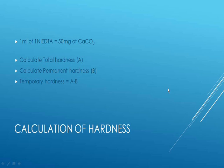To calculate permanent hardness, you need to boil the water sample so that dissolved bicarbonates of calcium and magnesium will precipitate out as carbonates or hydroxides of calcium and magnesium. Then filter that precipitate and use the filtrate to calculate permanent hardness using a similar procedure. Finally, the difference between total and permanent hardness will give you temporary hardness.